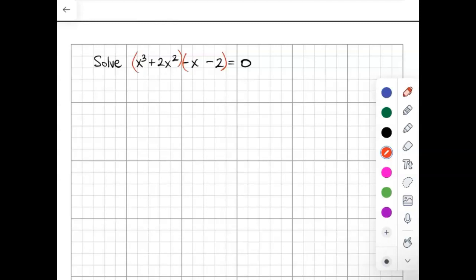So these first two, I see that they have an x squared in common. So if I factor out an x squared, that would leave me with x plus 2.